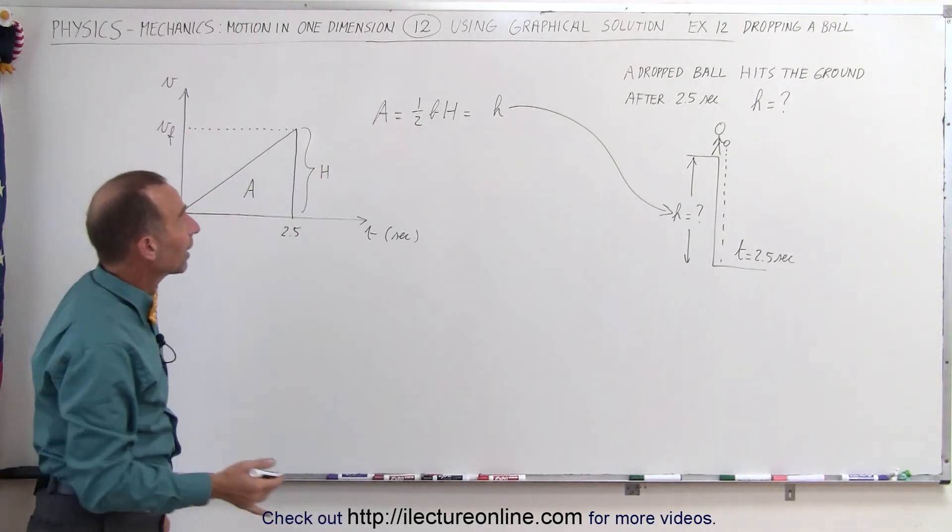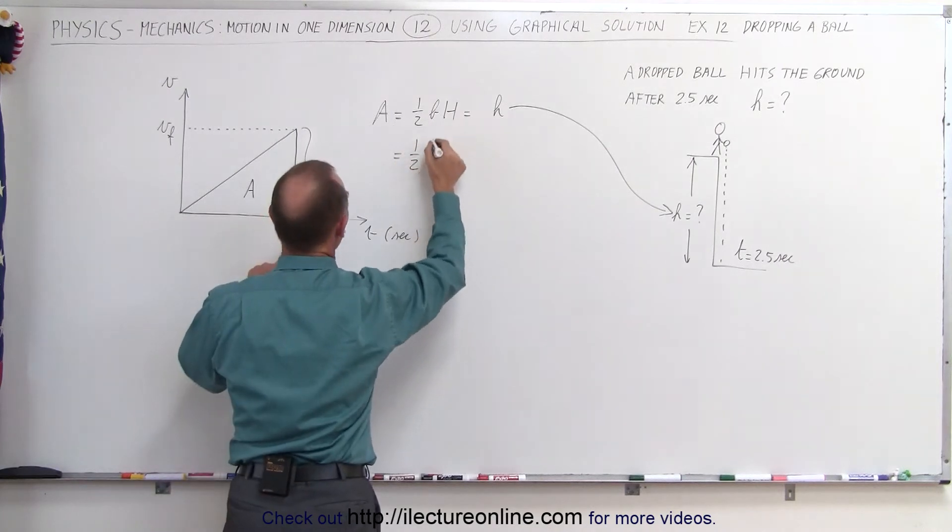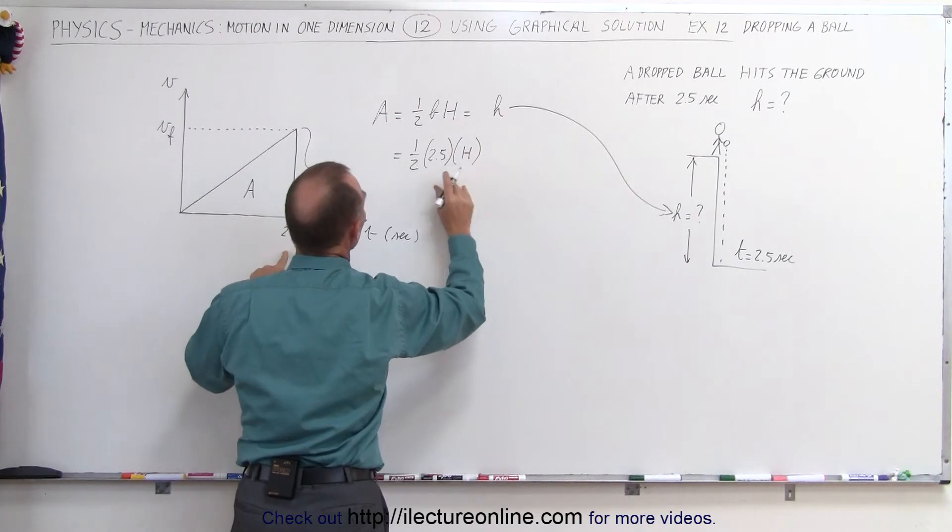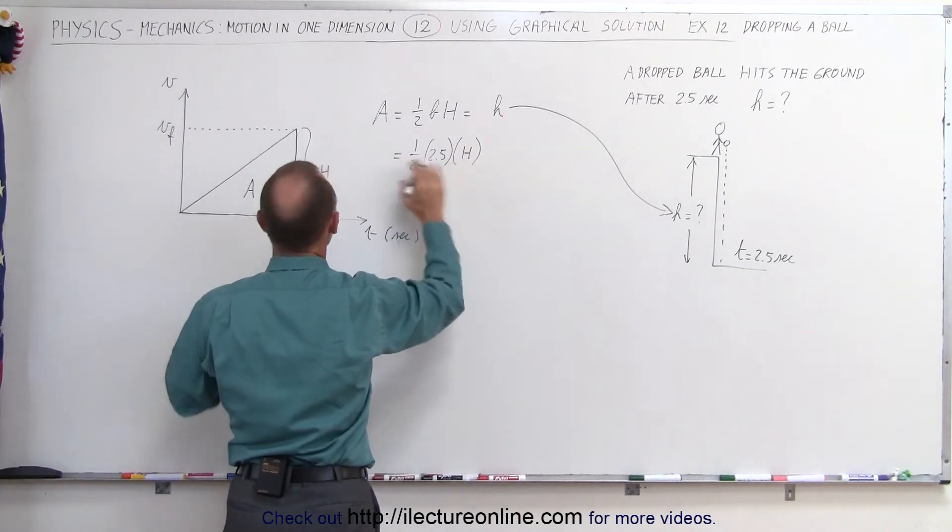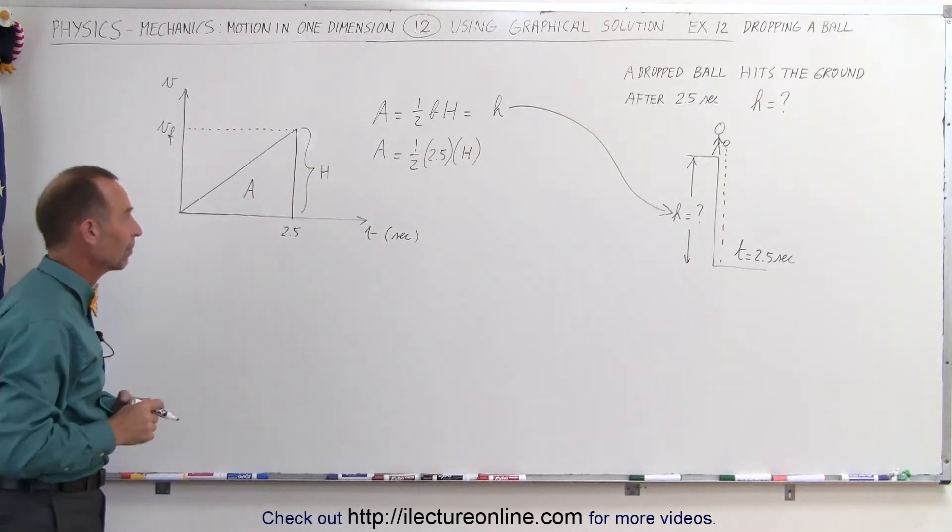And since we're looking for that, let's plug in the numbers that we have. So this is equal to one half the base which is 2.5 seconds times the height which is still not known. So since we don't know what the height is of this triangle, we can't yet find the total area, thus the height from which the ball is dropped.